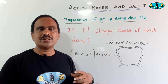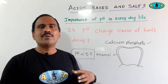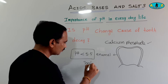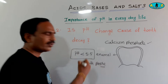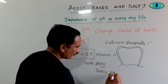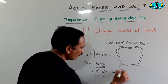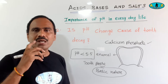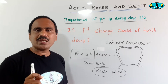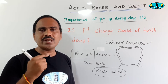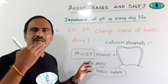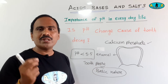How can we decrease the acidic nature in our mouth? By cleaning our mouth with toothpaste. Toothpaste is basic in nature. It neutralizes the acidic property in our mouth. By neutralizing the acidic property, it increases the pH value and decreases the acidic nature in our mouth. In this way, we can protect our teeth.